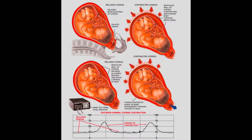Understanding uterine contractions in HIE. A uterine contraction during childbirth can be defined as a tightening motion of the uterus as part of the child birthing process. Contractions can come in multiple types. For example, prior to actual labor, a woman may experience contractions.